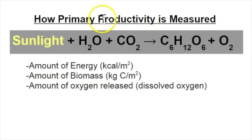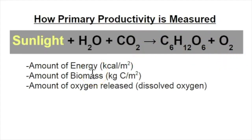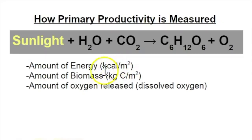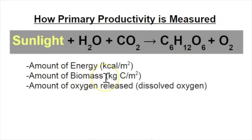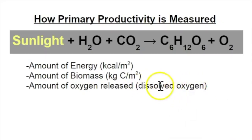How is primary productivity measured? Consider the equation for photosynthesis: sunlight plus water brings in carbon dioxide to be fixed into something organic like sugar, and releases oxygen. Because primary productivity is really a measure of the efficiency of these producers supporting the environment, we could look at the amount of energy captured, usually in kilocalories per meter squared. We could also look at the amount of biomass — how much plant material is there to support the food chain — or, in aquatic systems, how much oxygen is released, since it's easy to measure dissolved oxygen in water.